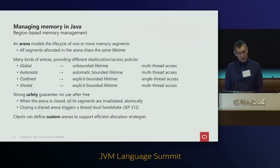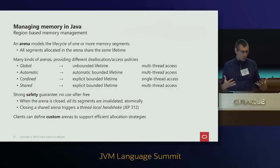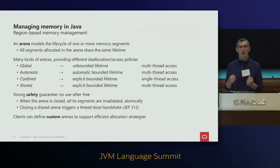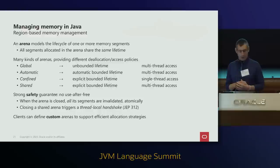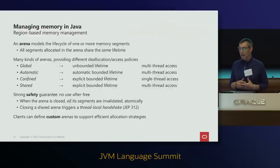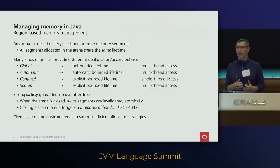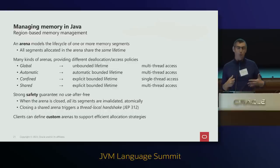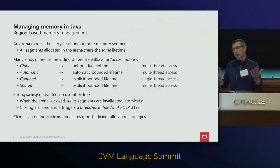What we did in the FFM API was to resurrect literature from the 1960s about region-based memory management. We introduced an abstraction called Arena, which manages the lifecycle of one or more memory segments. All segments allocated inside an Arena share the same lifetime — this means they can exchange pointers in a completely safe manner. The FFM API provides several kinds of Arenas: a global Arena where memory never goes away, an automatically-managed Arena similar to ByteBuffers, and explicit Arenas you can close manually.